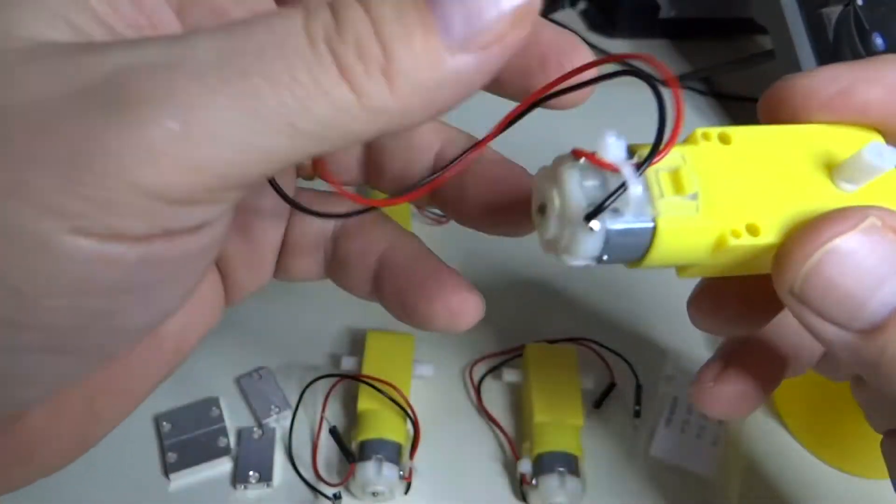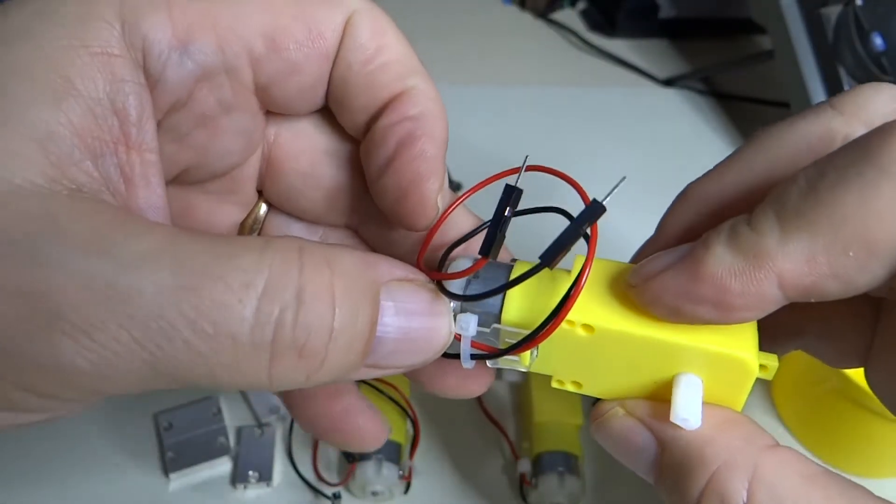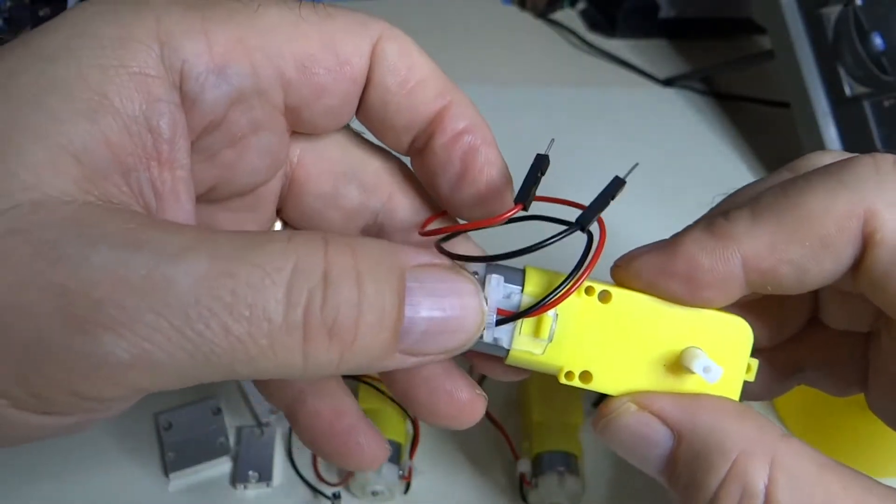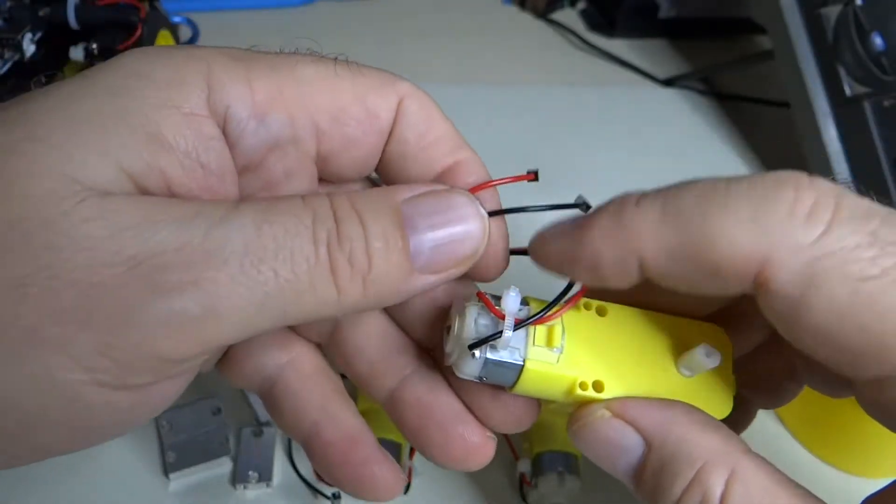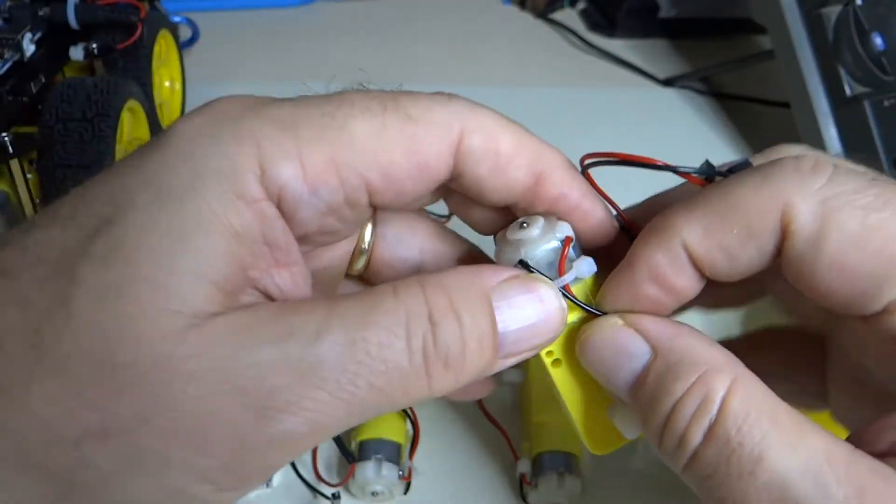As you're looking at your motors, inspect them to make sure that the solder joints are good, that there are no broken wires, and that the wires are strain relieved underneath this wire tie.